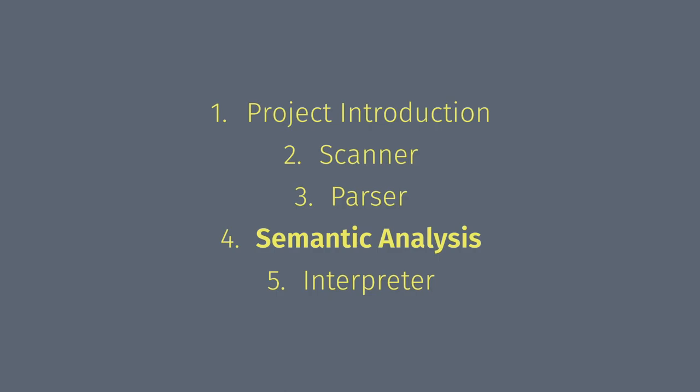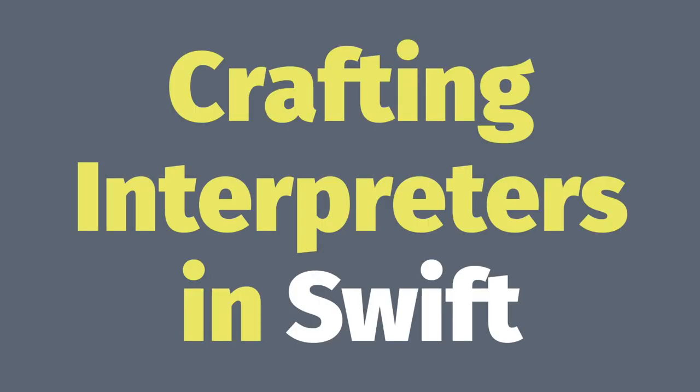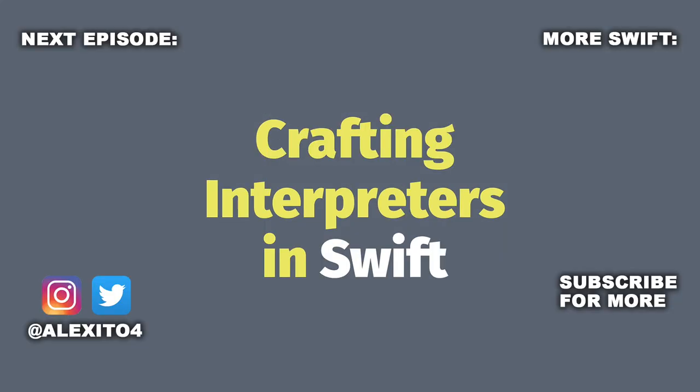We also saw how we took advantage of this semantic analysis pass to provide compile-time errors before the interpreter even runs. In the next episode we're going to look at the interpreter. If you liked this episode and this series, make sure to like the video and subscribe to be notified when the next video is up. Thanks for watching and see you in the next episode.